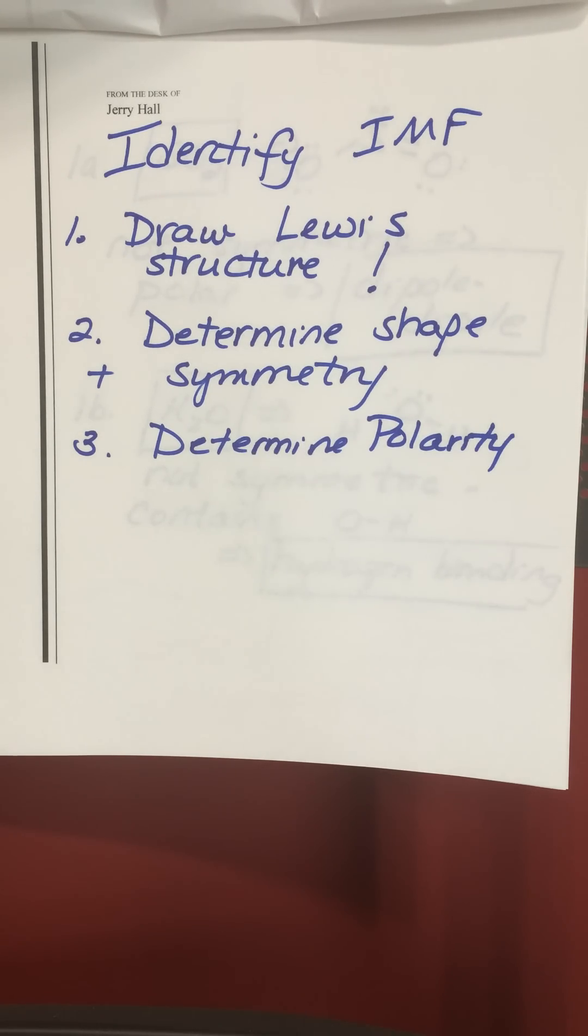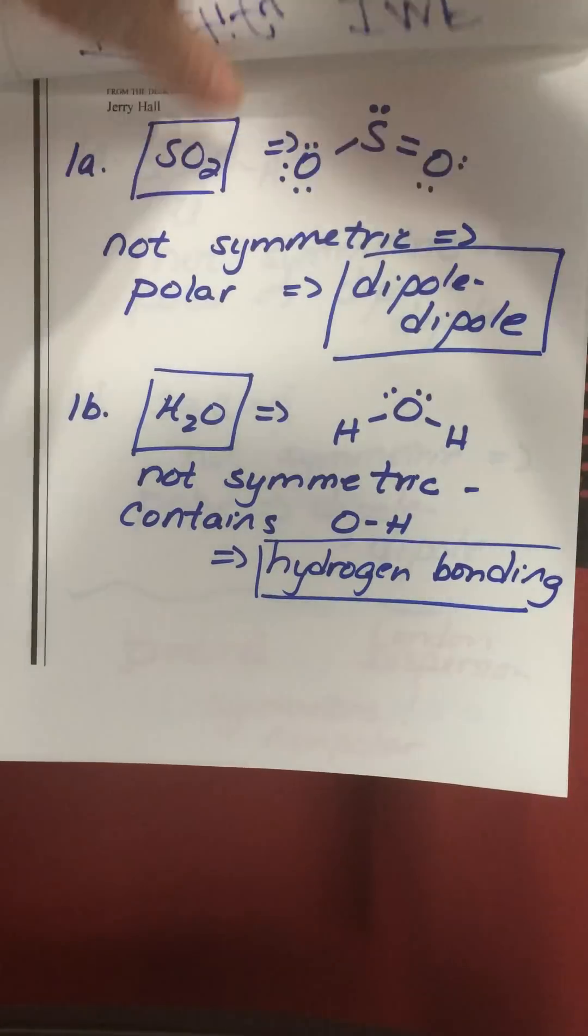You need to draw the Lewis structure in order to determine the shape of the molecule, and it is the three-dimensional shape that determines whether it's symmetric or not. Once you've drawn the shape and determined the symmetry, you will be able to know if it's a polar or non-polar molecule.